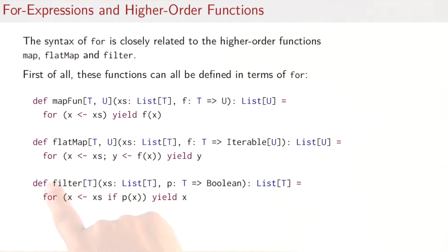FlatMap would be for x taken from the first list and y taken from the result of applying f to each element of the first list yield y. So that's a flatMap.